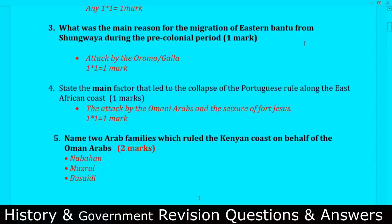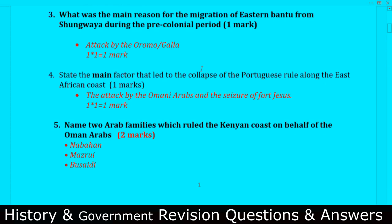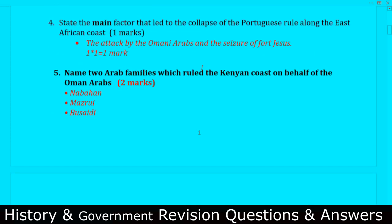Question number three: What was the main reason for the migration of Eastern Bantu from Shungwaya during the pre-colonial period? They usually repeat this question. The answer is they were attacked by the Oromo — you can also call them Galla.